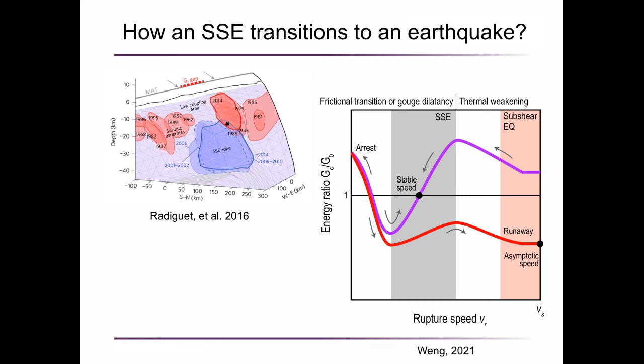In a low seismic coupling fault segment, the accumulated shear stress is low. If the velocity strengthening mechanism dominates, then the energy ratio function could be like this purple curve shows. Then the rupture speed is confined to be a low value and stable value, and therefore only forms a slow slip event.